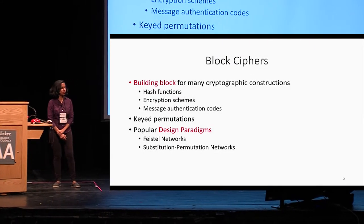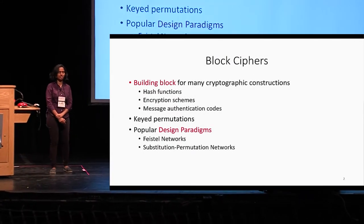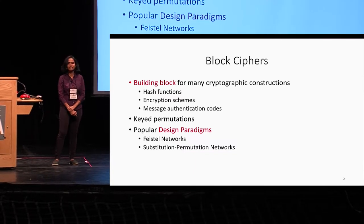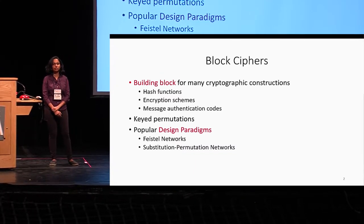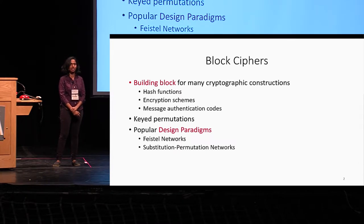Block ciphers are a building block for many cryptographic constructions such as hash functions, encryption schemes, etc. These are keyed permutations that take as inputs a key K and an input X and produce an output Y.